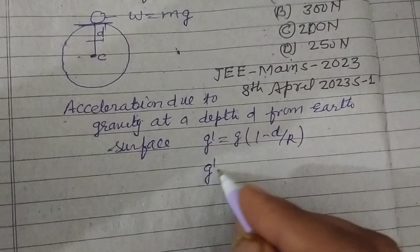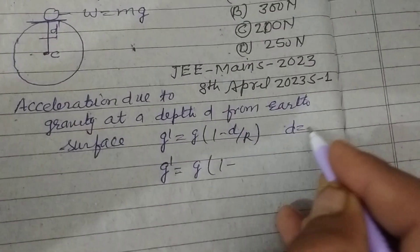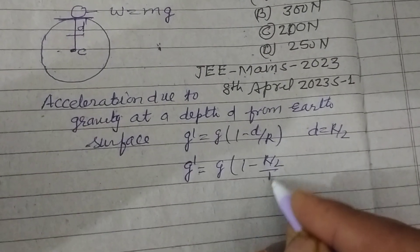So g dash equal to g, here d is given to us, which is r by 2, so r by 2 upon r, this r is cancelled.